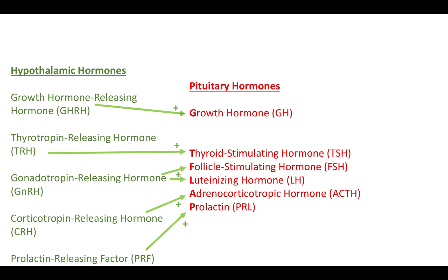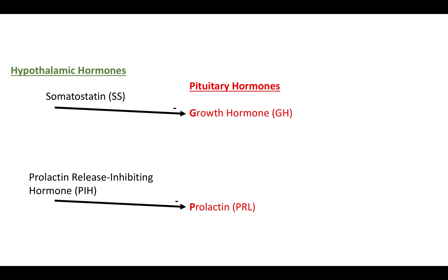There are also two hypothalamic hormones that inhibit the release of hormones from the anterior pituitary: somatostatin, which inhibits the release of growth hormone, and prolactin-release inhibiting hormone, which inhibits the release of prolactin.